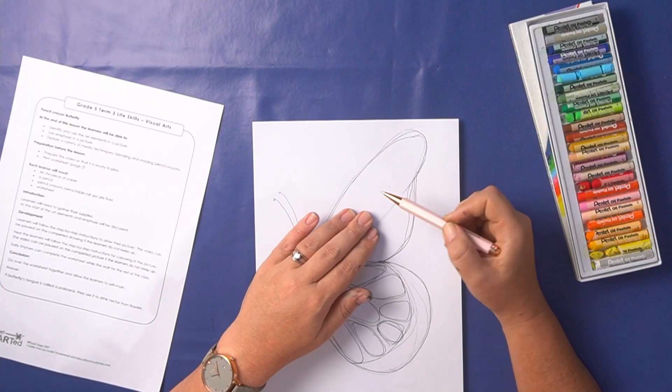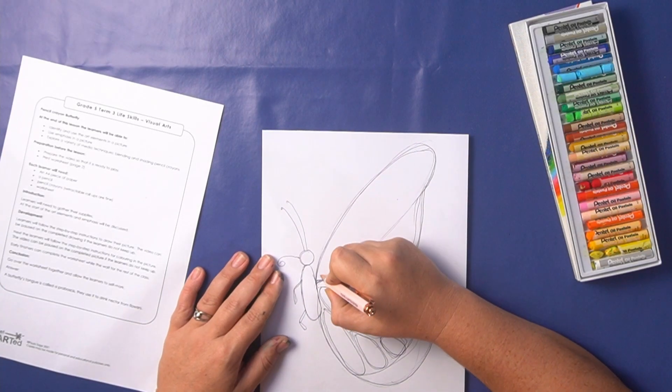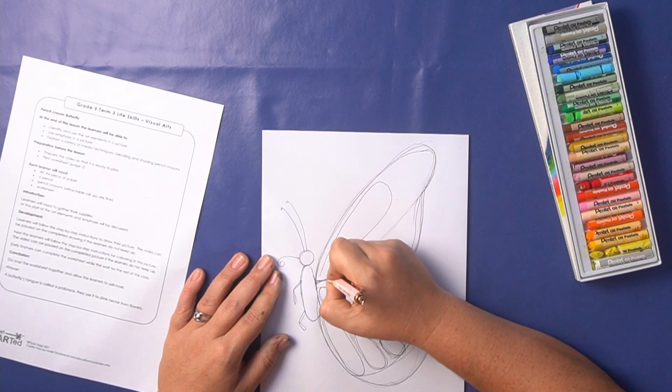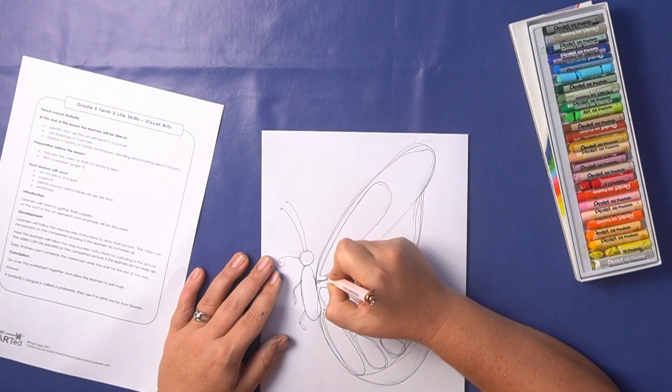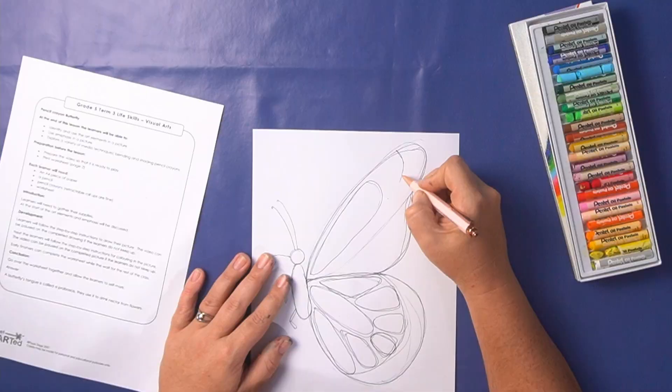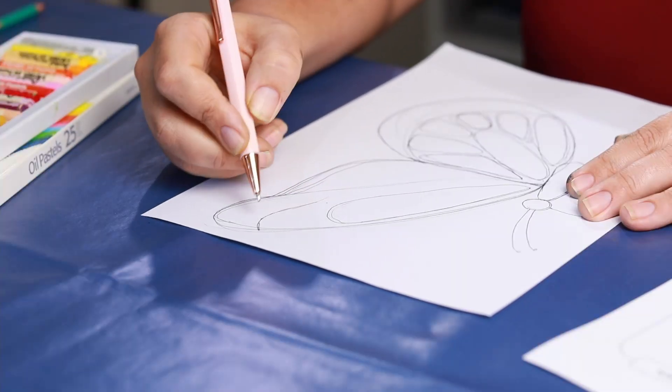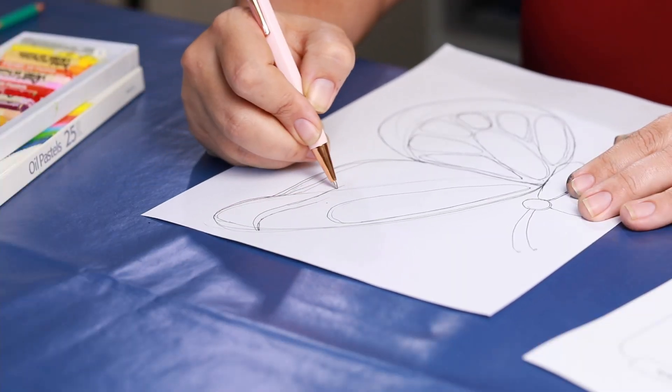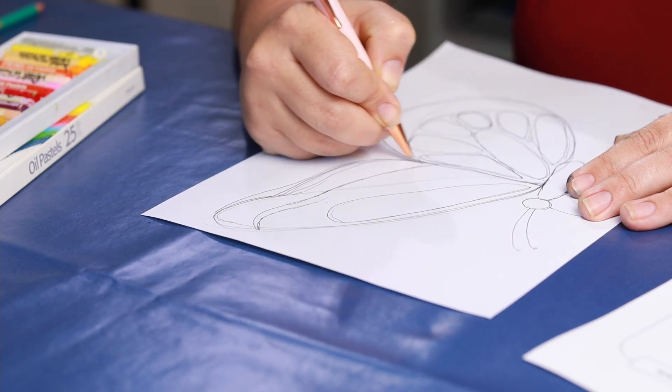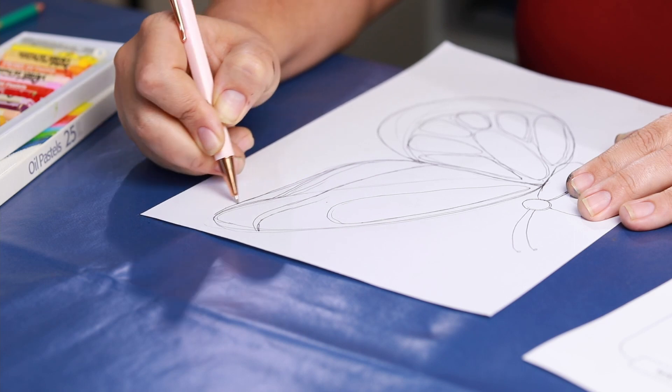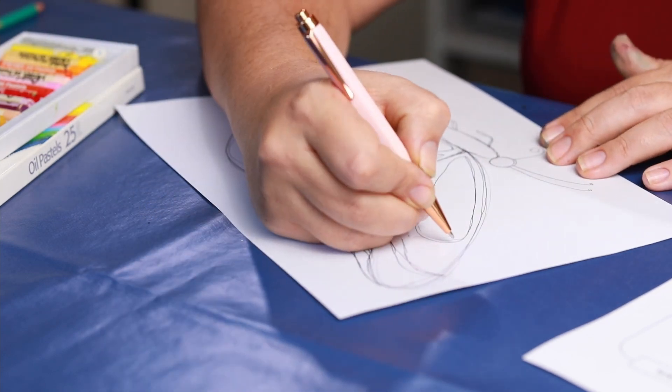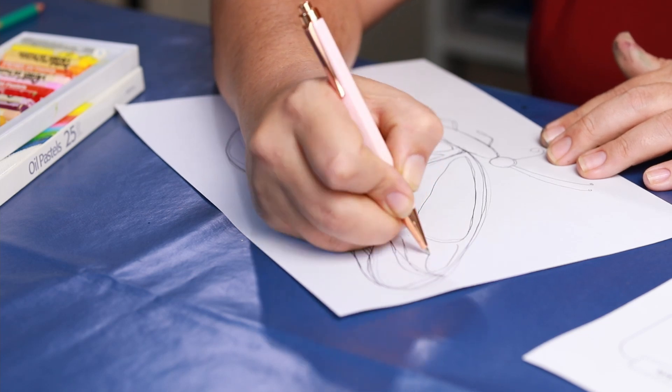Let's add our patterns on our top wing and this is very similar. We're going to start at the top of the wing with a nice big oval. So that's the base of it. Again the edges of the wing have got the black with the little white dots. So we're just going to mark off a space to keep for them. And then again smaller ovals from the big oval to the outside edge.